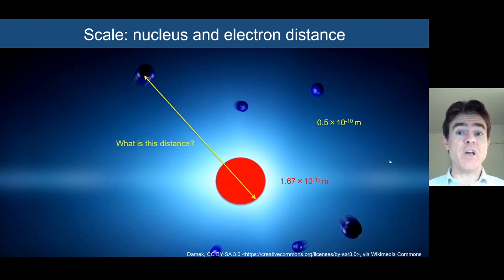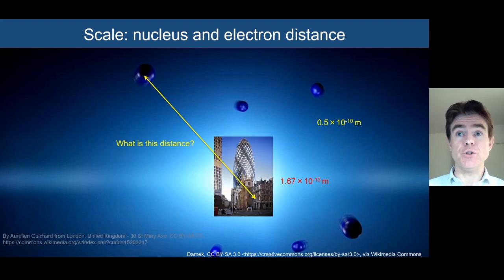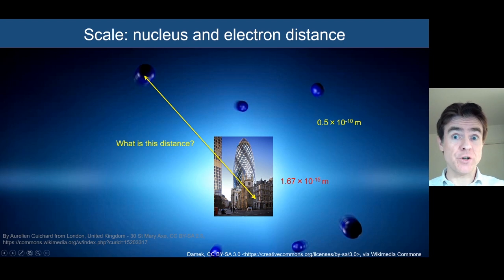Those numbers might seem a bit abstract, and so that's why I'm going to use an analogy. I'm going to use the Gherkin building in London, which is a skyscraper, or rather a small skyscraper, about 180 metres tall, and use that as a way of conveying how far out the electron is. I'm going to use that Gherkin building to represent the size of the proton, the size of the nucleus of a hydrogen atom.